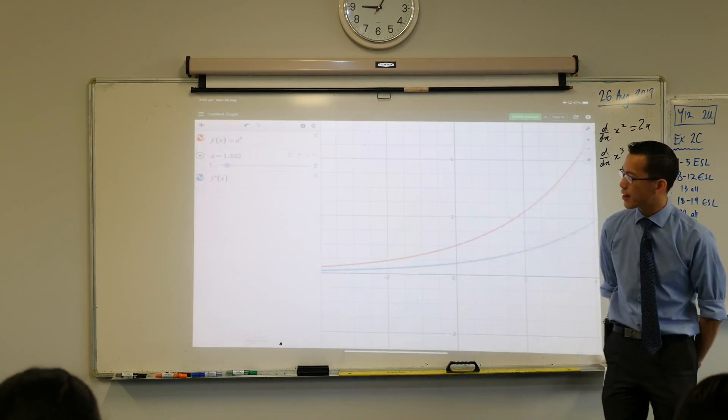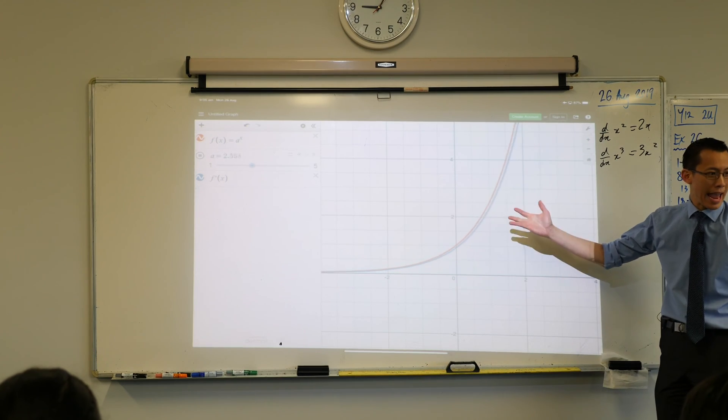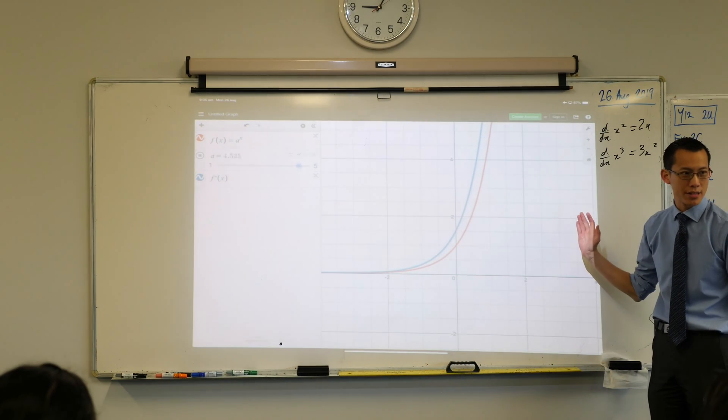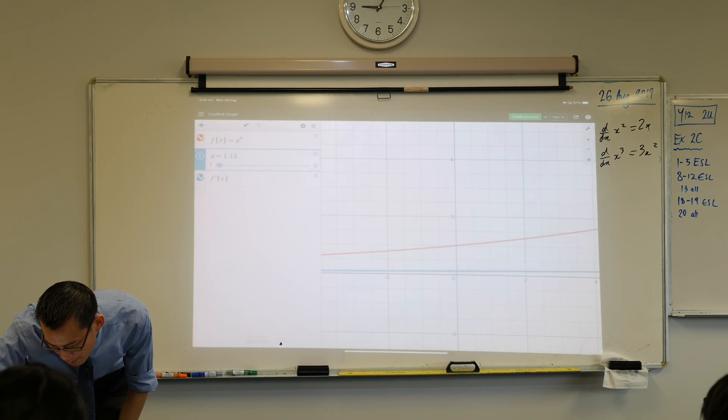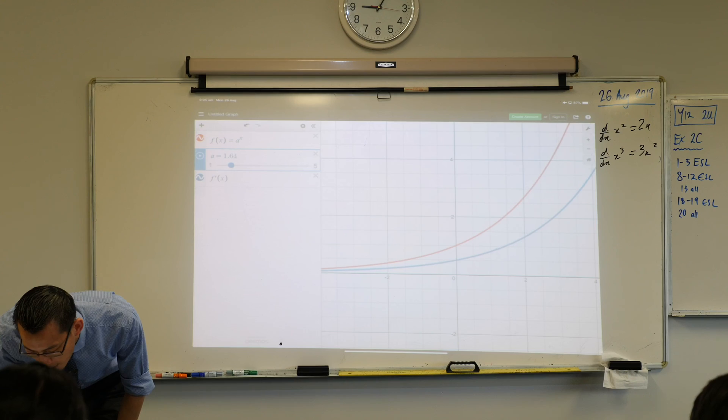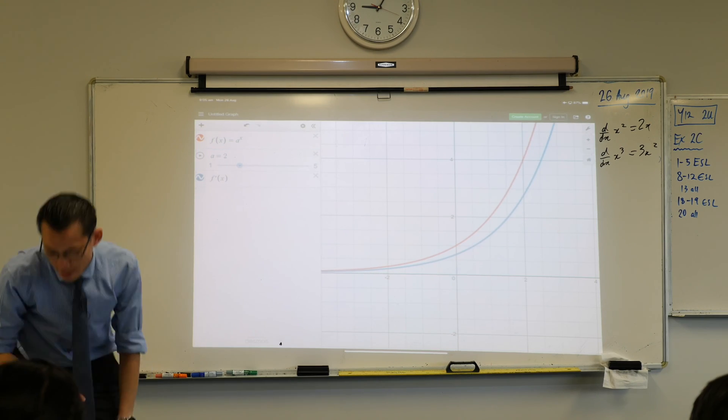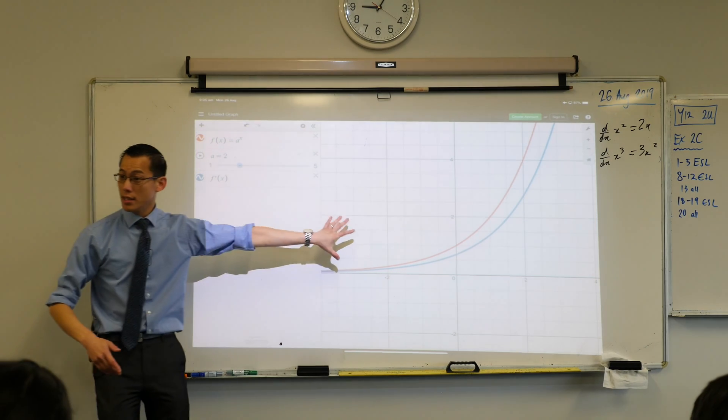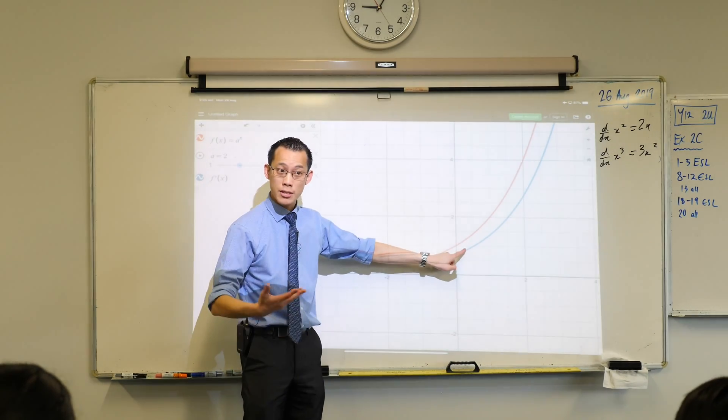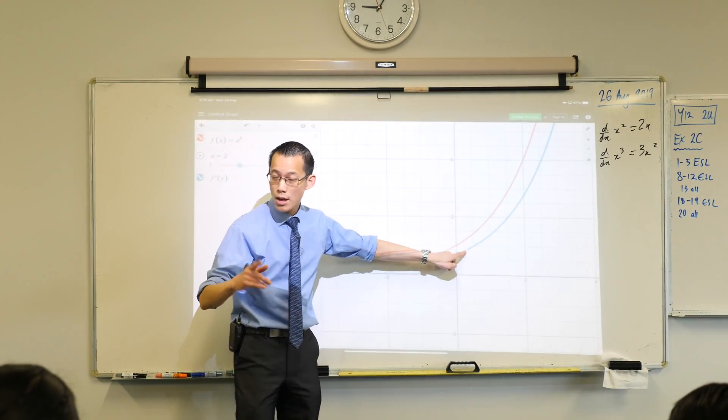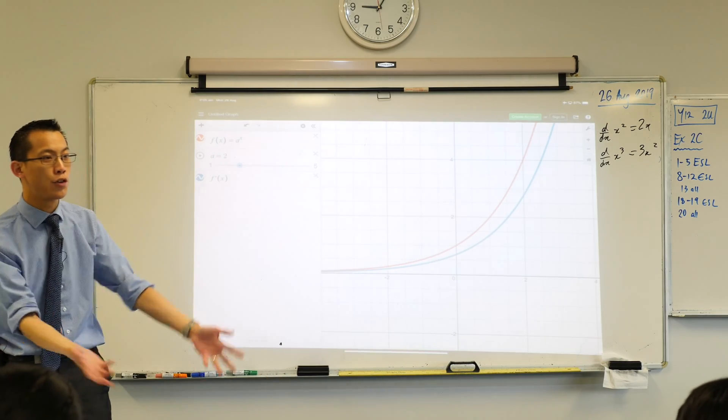I'm just letting it play now. Did you notice there was kind of like a special value of A somewhere in between here? Did you notice that? Let me just hit pause back at A equals 2. Sorry. It's hard to be precise on an iPad. That'll do about there. Oh, there we go. Bang on. We noticed in this case, here's our red function, our original one. Derivative was just beneath it. Did you notice that? An exponential was just beneath.